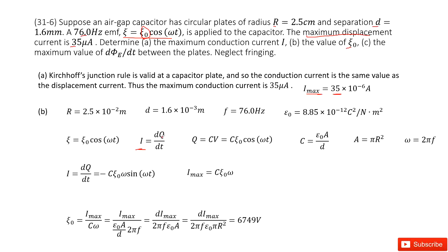Now this q is the charge on the capacitor. We can write it as capacitance C times voltage v of this capacitor. This is given as epsilon naught cosine omega t.